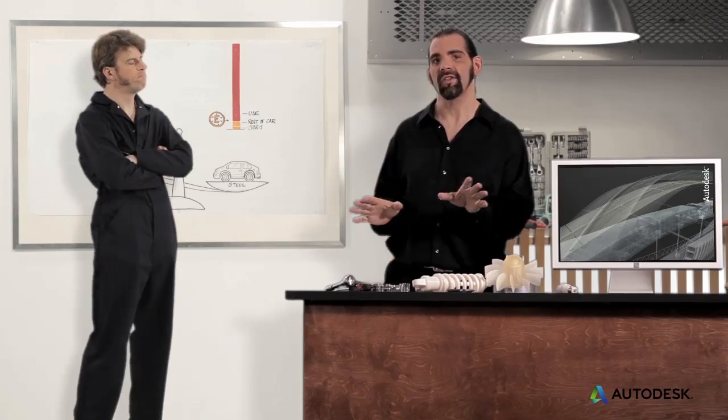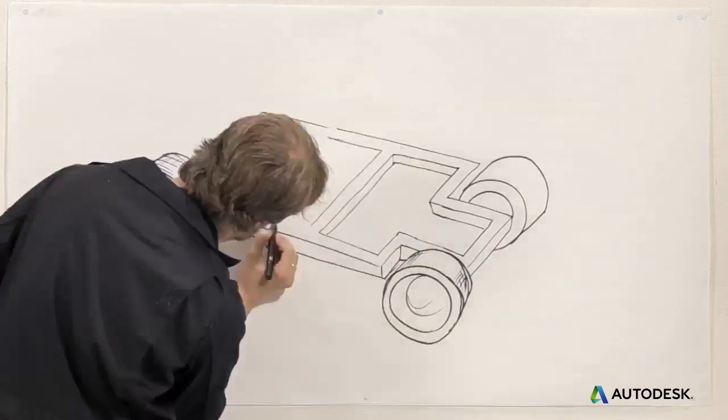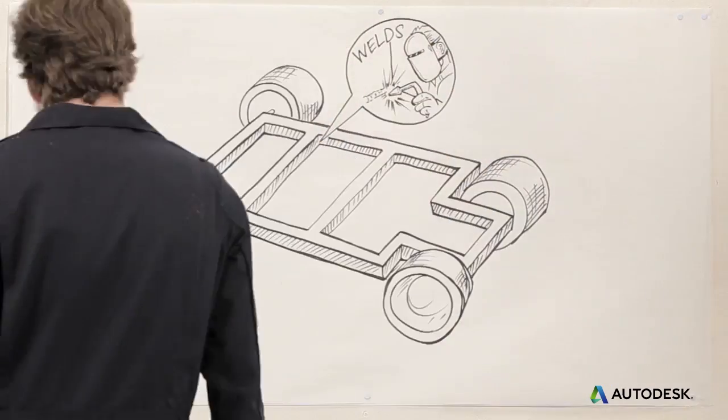But keep in mind that different materials may need different geometry and manufacturing. For example, aluminum parts in a chassis will have thicker walls and different welds.